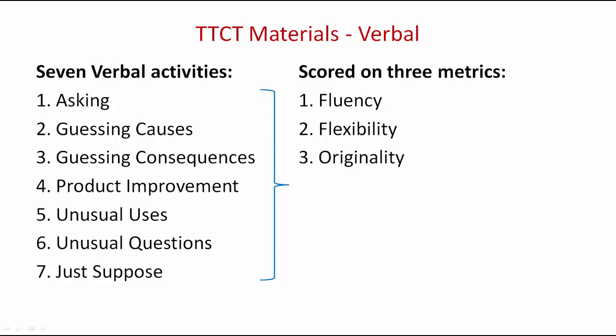Another example: during Activity 5, the person being assessed may be provided with the name of a certain object and asked to come up with as many unusual uses for the object as they can. The verbal section is scored using three different metrics. The first metric, fluency, is a count of the total number of understandable, meaningful, and relevant ideas that are generated in response to the stimulus provided by the assessor.